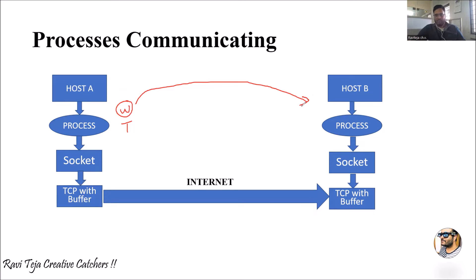Host B is another smartphone whose user is chatting. We have two applications: WhatsApp and Telegram. Right now we are using WhatsApp to send a message, so all the programs or set of instructions related to WhatsApp will be running as a process.